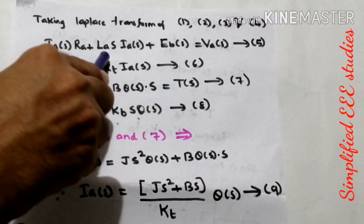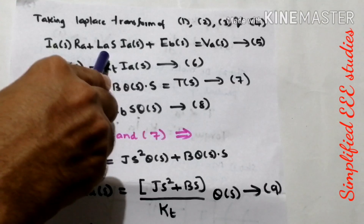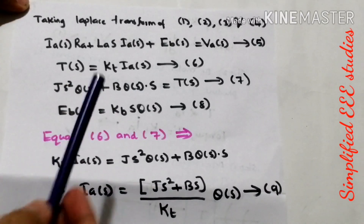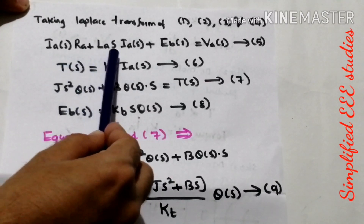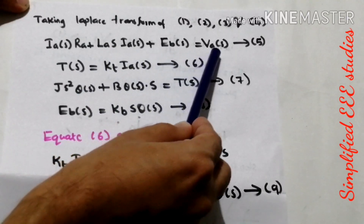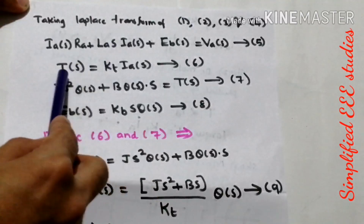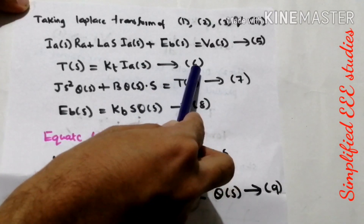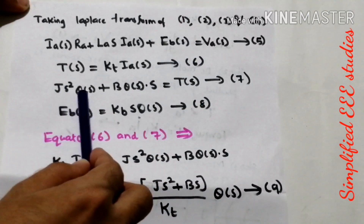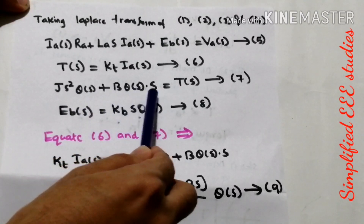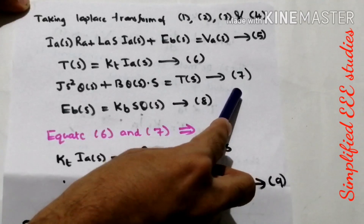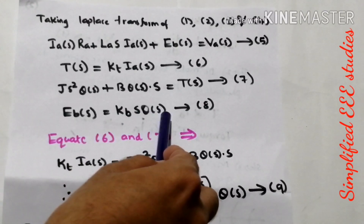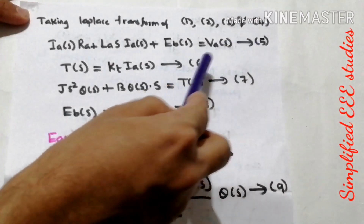As of now we have 4 equations. In order to convert from time domain into S domain, it is better to take the Laplace transform. Taking Laplace transform of the first equation: Ia(S)·Ra + La·S·Ia(S) + Eb(S) = Va(S) — call this equation 5. Laplace of the second equation: T(S) = Kt·Ia(S) — equation 6. Third equation: J·S²·θ(S) + B·S·θ(S) = T(S) — equation 7. And: Eb(S) = Kb·S·θ(S) — equation 8.